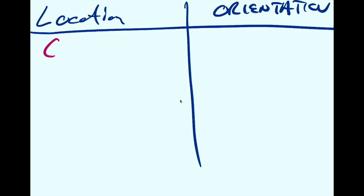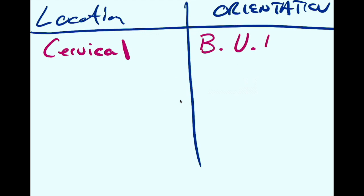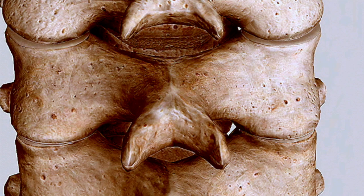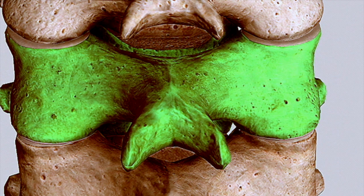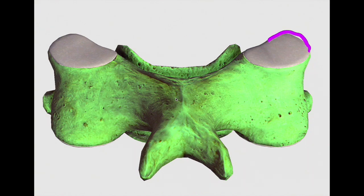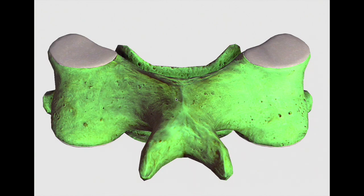In the cervical region, the superior facets are oriented backwards, upwards, and medial — so BUM. That should be easy to remember. If we take a look at one of the cervical levels: upwards is here, medially is kind of hard to see but you can see on the side there's a little elevation, so there's a little bit of medial. And of course it's backwards — it's facing the back.